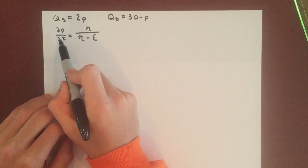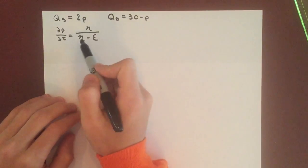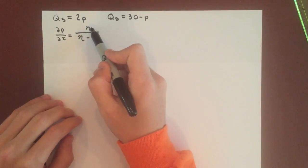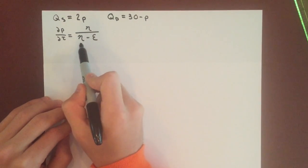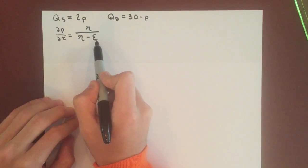You can take this partial derivative, which can be reduced to an equation: the elasticity of supply over the elasticity of supply minus elasticity of demand.